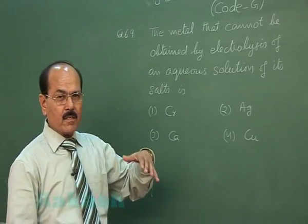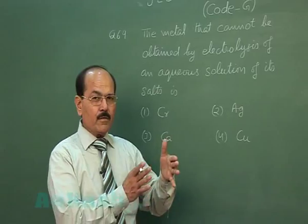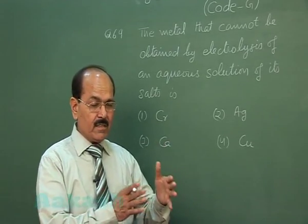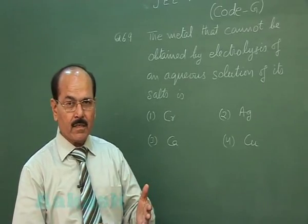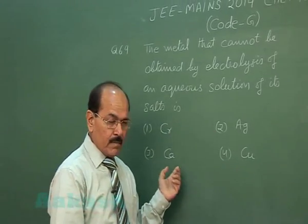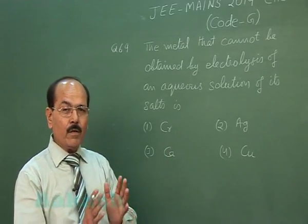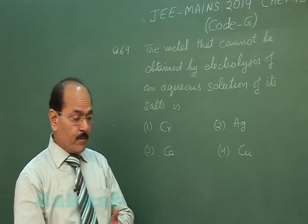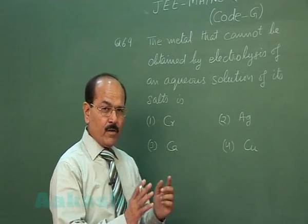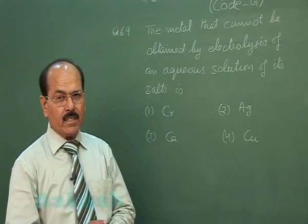During electrolysis of an aqueous solution, those metal ions are reduced at the cathode which have reduction potential higher than that of hydrogen ion. Of these four metals given, calcium is the only metal that has got lower reduction potential than that of hydrogen ion. Therefore, calcium ion will not be reduced at the cathode. Instead, hydrogen ion will be reduced at the cathode.